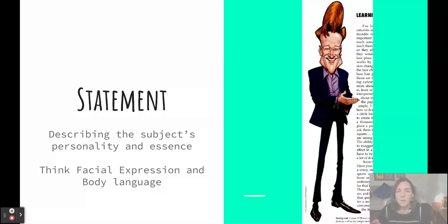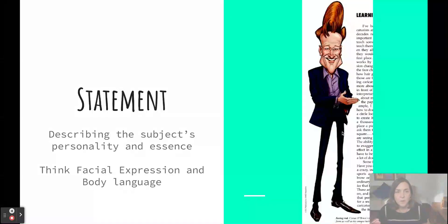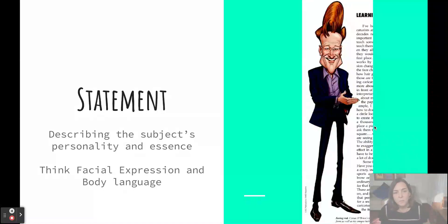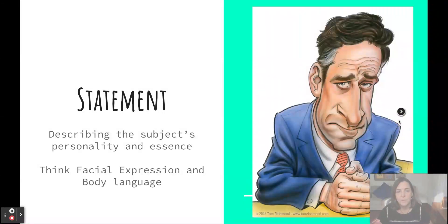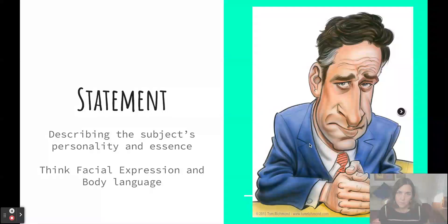The last element of caricaturing is statement — think about how your drawing can make a statement about the overall personality or essence of your subject. Richmond combined Conan O'Brien's signature hairstyle with a casual pose and friendly expression to describe his easygoing, charming, and likable personality. Jon Stewart's pose is very different — although both are comedians, Jon Stewart is known for using humor as social commentary, so his pose conveys a more serious personality.